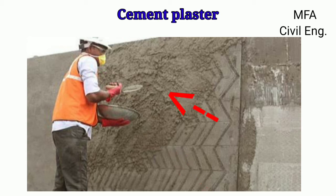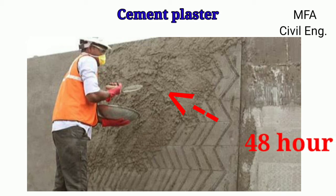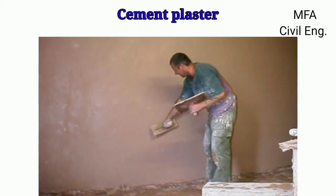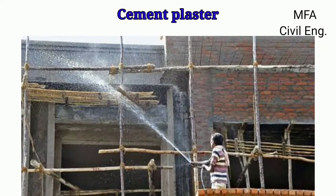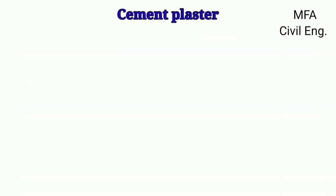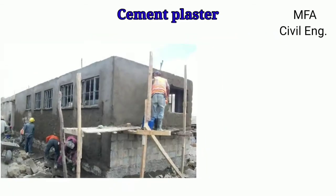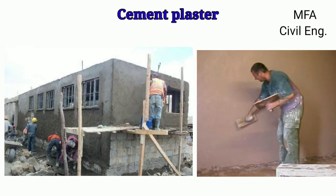The finishing coat is applied over the rough, damp surface of the first coat within 48 hours. The coat is properly troweled and finished smooth by a wooden float, and finally the plaster is cured for at least seven days. For external and internal plastering of a building, the proportion of cement mortar varies.